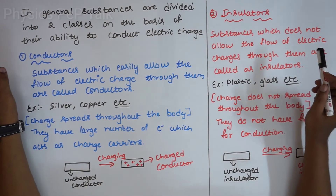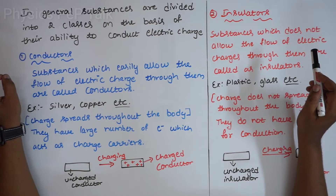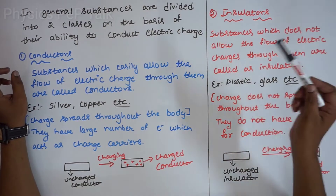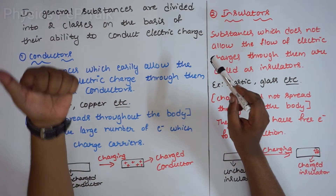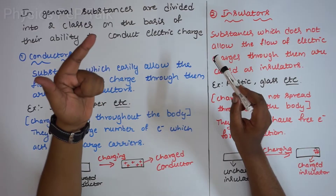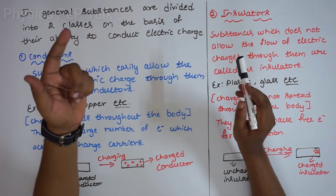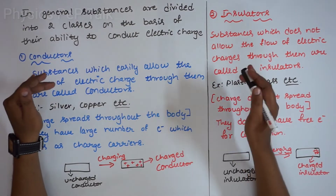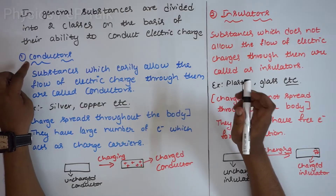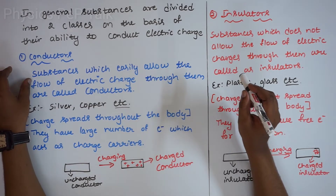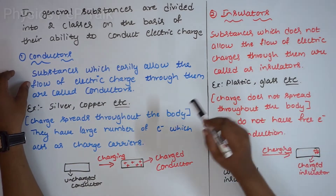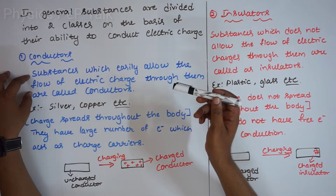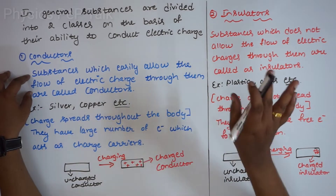In general, substances are divided into 2 classes on the basis of their ability to conduct electric charge — that means they should be either conductors or insulators. Substances which easily allow the flow of electric charge through them are called as conductors. It will allow the charge to flow through them.